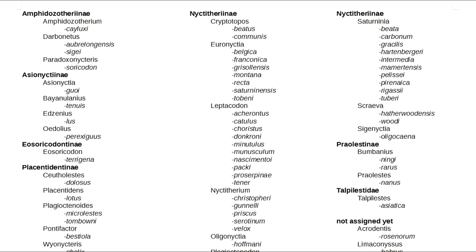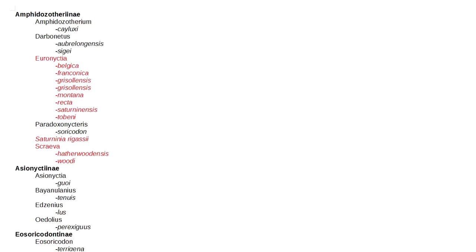The paper also touches on taxonomy: Hooker states that Euronyctia, Scrava, and Saturninia rigasi of the Nyctytherinae are instead Amphidozotherinae. Also interesting is that Hooker ranks nyctytheriids into Euarchonta in this paper. Remember, it's not determined what they really were, but the greater body of sources — including the Chapter 1 paper — says Eulipotyphla.